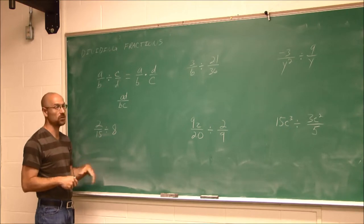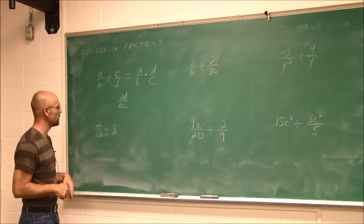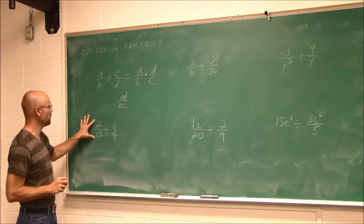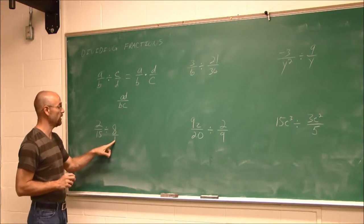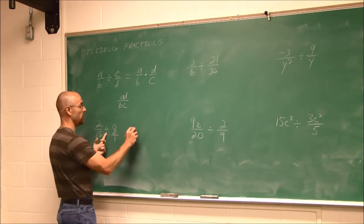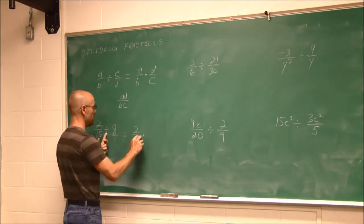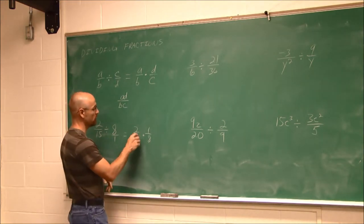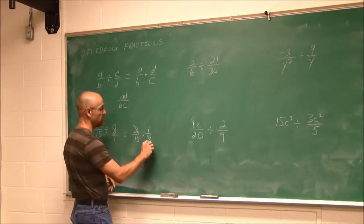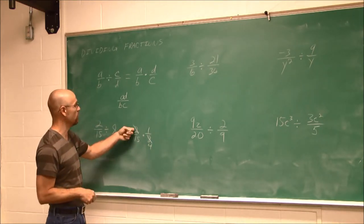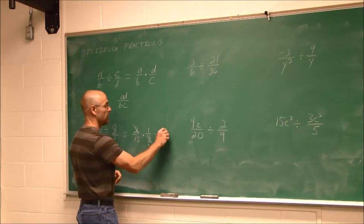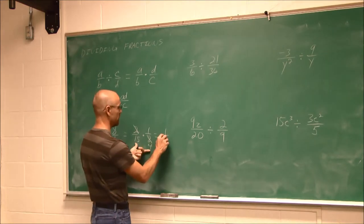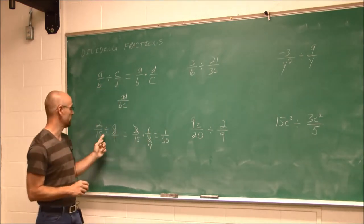Now here, I have 2/15 divided by 8. Instead of variables, we have actual numbers. I can always think of a whole number as being over 1. So 2/15 divided by 8/1. I can change this to multiplication: 2/15 times 1/8, which is the reciprocal of 8. I could do some reducing. 2 is a common factor of 8, so I factor out that 2. Now I have 1 times 1 is 1, and 15 times 4 is 60. 1/60 is the answer.